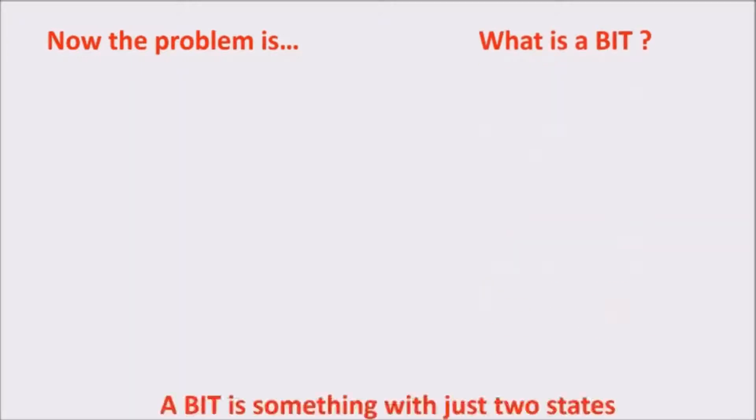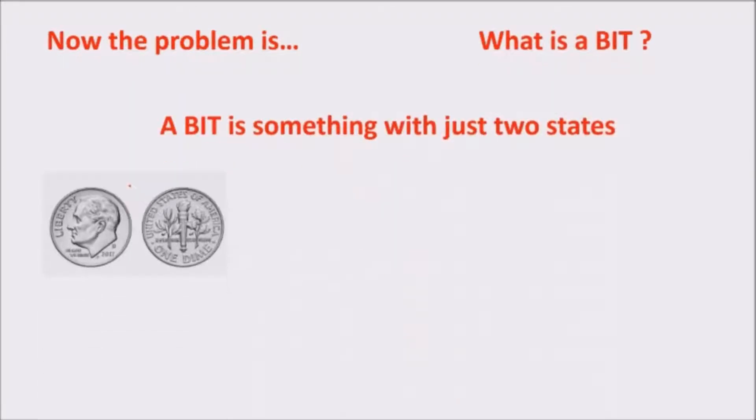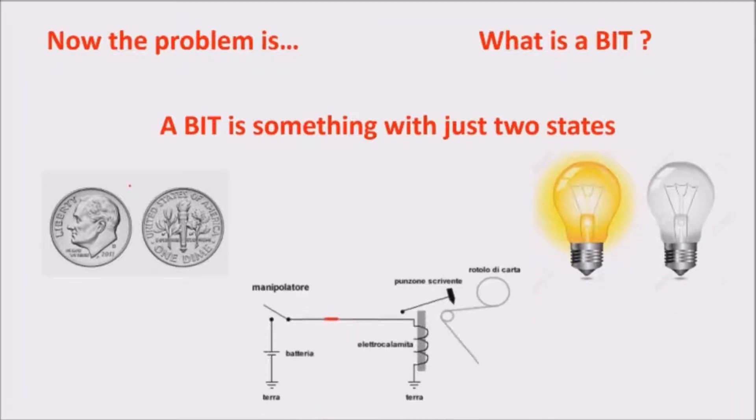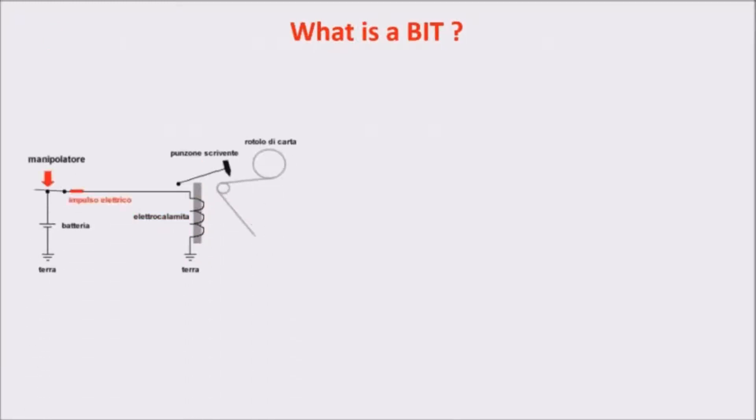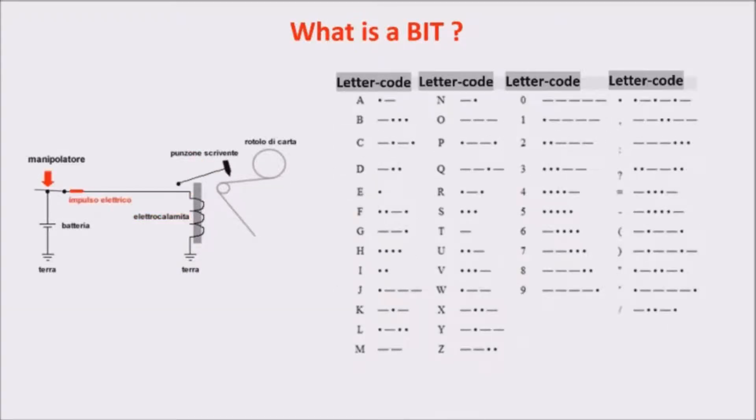A bit is something with just two states, head or tail, on and off of a light bulb, or dash and dot of the telegraph. Actually, the telegraph is a good example, because we had a little step. Indeed, dash and dots are organized to code every character and punctuation of the alphabet. In this way, we can transmit messages.